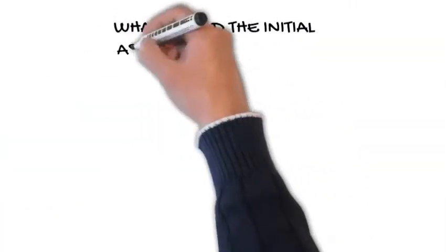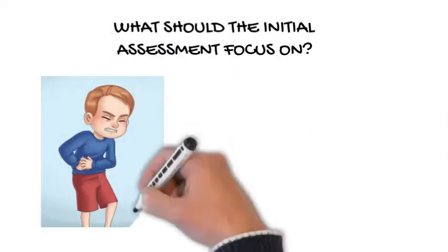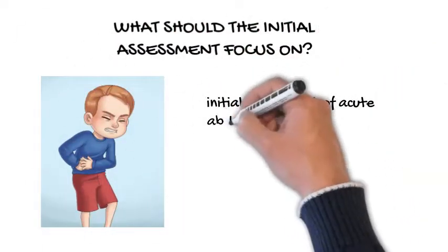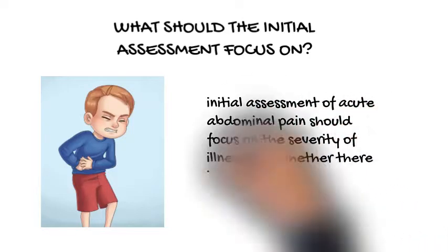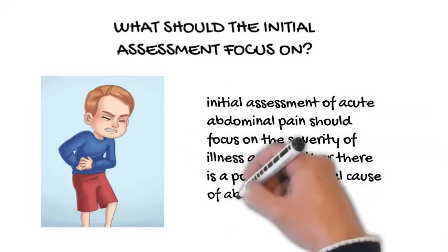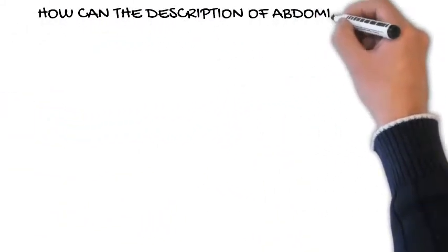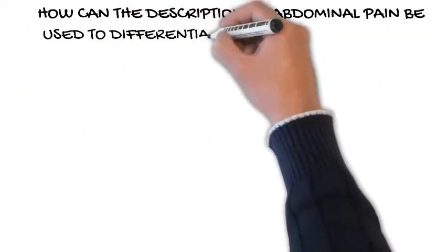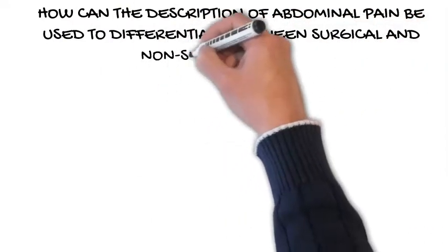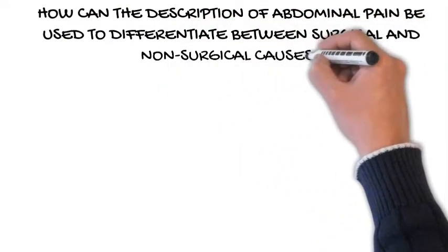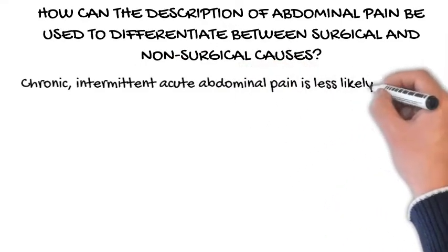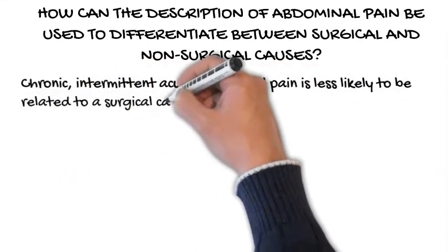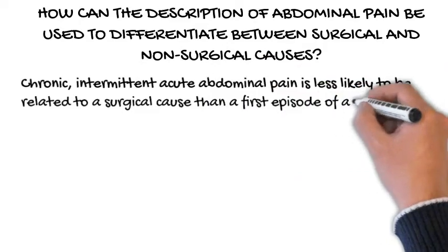What should the initial assessment focus on? The initial assessment of acute abdominal pain should focus on the severity of illness and whether there is a potential surgical cause. Chronic, intermittent acute abdominal pain is less likely to be related to a surgical cause than a first episode of acute pain.